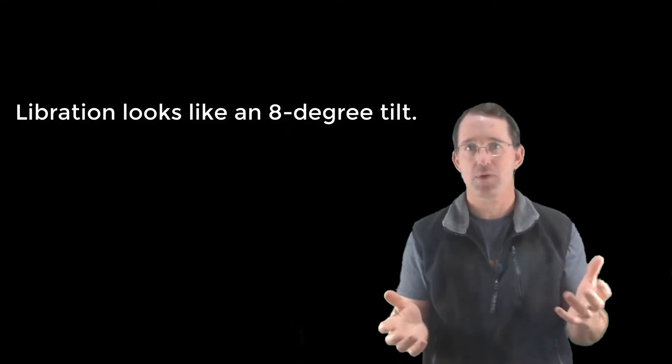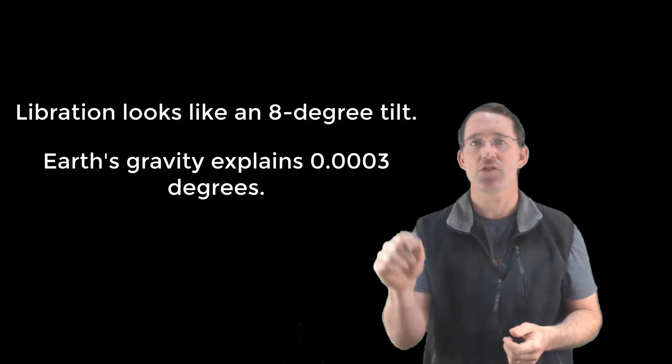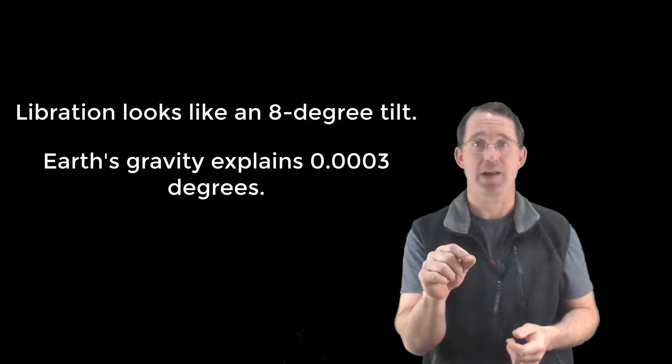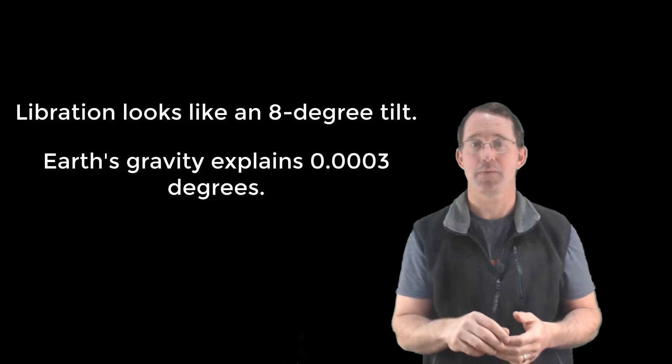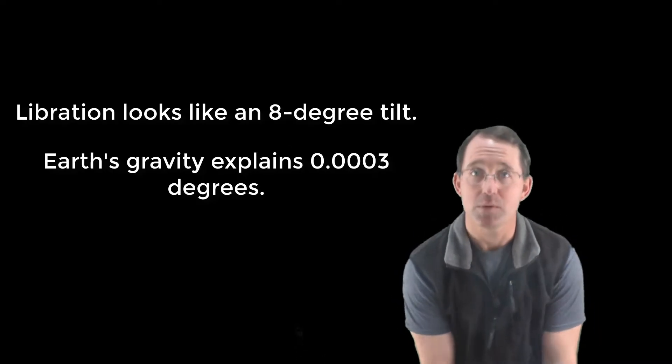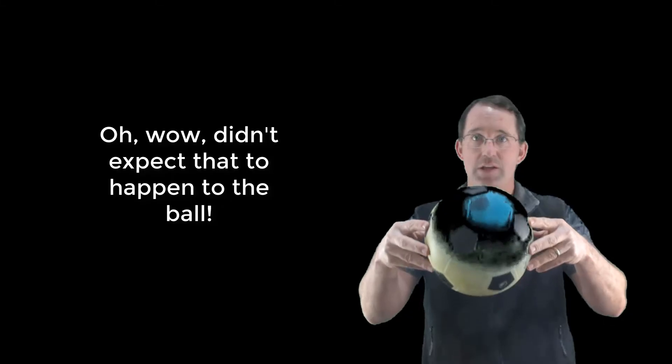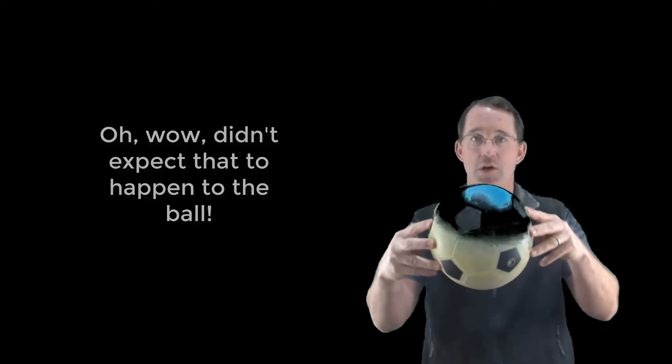The moon's libration wobbling can tilt the moon almost eight degrees one way or the other. And yeah, Earth's gravity does play a role, but it accounts for less than 0.0003 degrees out of that eight degree wobble. So we're not seeing Earth's gravity change the way that the moon is tilted. We're not seeing the Earth physically change the position of the moon during the course of its orbit.